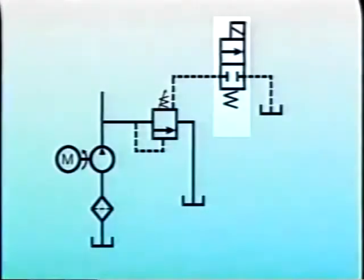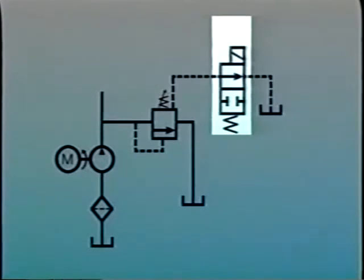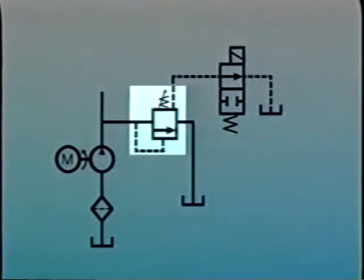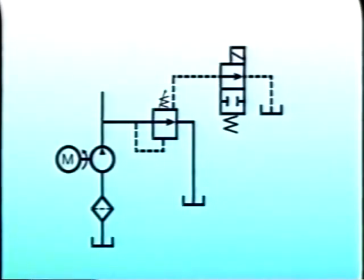Usually, a solenoid operated valve is used to vent the pilot valve. Whenever the solenoid is energized, system pressure has to overcome only the tension pressure of the light bias spring. Fluid returns to tank at a very low pressure.